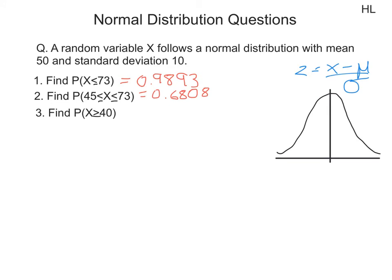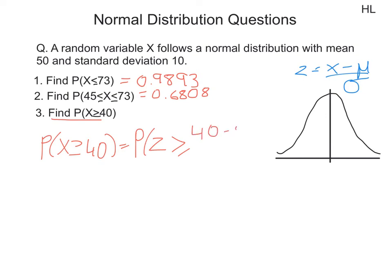Our last question asks us to find the probability that x is greater than or equal to 40. Using our formula, the probability of x being greater than or equal to 40 equals the probability that z is greater than or equal to x minus mu over sigma. Here x is 40, mu is 50, and the standard deviation is 10, giving us the probability that z is greater than or equal to minus 1.